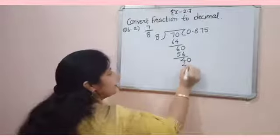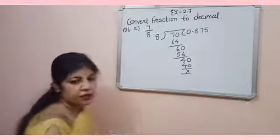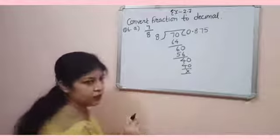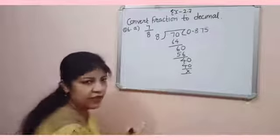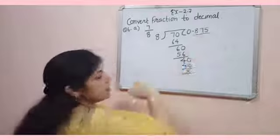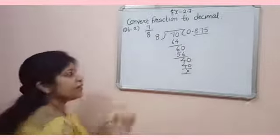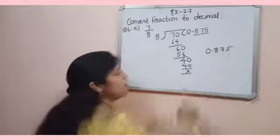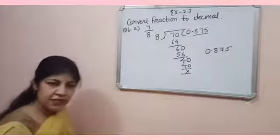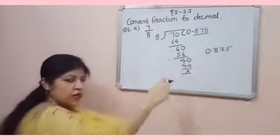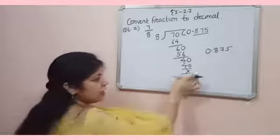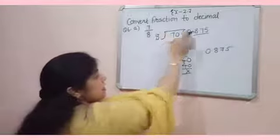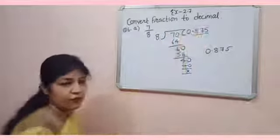Means, the multiple of 8. That is, 8 into 5, 40. Now, it is completely divisible. So, the decimal representation of 7 by 8 is 0.875. Keep on doing like this until you get the remainder 0. So, it is the decimal representation of a fraction.